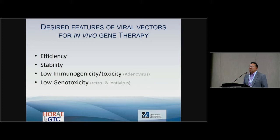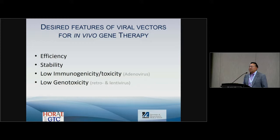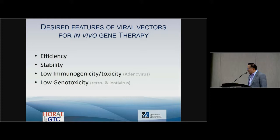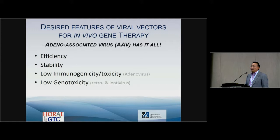As someone who has been in gene therapy for 20-some years, my dream vector is highly efficient and stable — meaning one shot forever — with little immunotoxicity, not like adenovirus. We also want low genotoxicity, avoiding non-specific random insertion mutagenesis, which can sometimes be caused by RNA viruses. We believe that AAV has all those advantages.